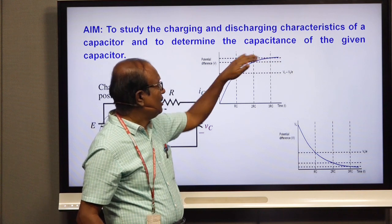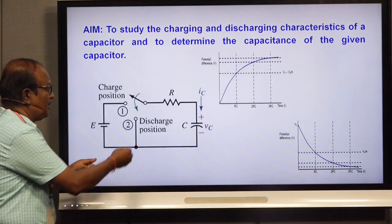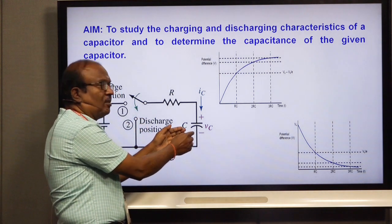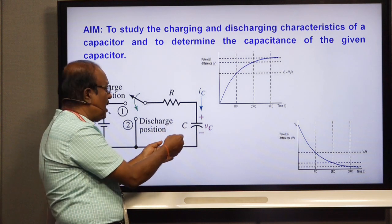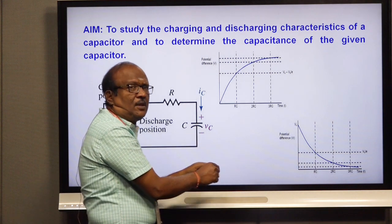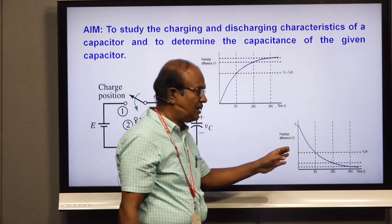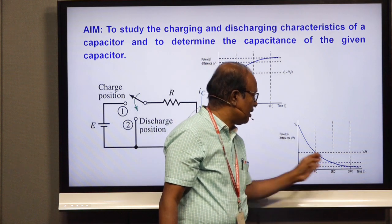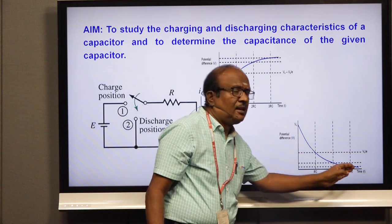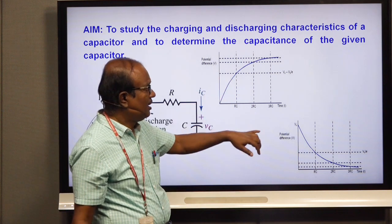Once the capacitor reaches the maximum value V0 it remains constant. Then we switch to discharging mode. The charges stored in the capacitor discharge and the voltage decreases. At time T equal to 0 the voltage is V0, and for every 10 seconds we measure the voltage. This graph is in the form of exponential decay. From this graph we measure the capacitance by finding the time constant.